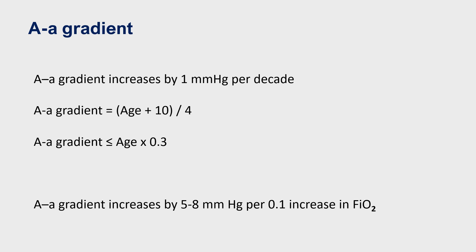As the FiO2 increases, the alveolar oxygen concentration increases. Thus, the gradient also tends to increase by 5–8 mmHg with every 0.1 increase in FiO2. In situations where we are unsure whether this increase in gradient is due to the increase in FiO2 or due to a lung pathology, calculation of the arterial-to-alveolar ratio will be beneficial. In normal circumstances, the arterial-to-alveolar partial pressure ratio should be more than 75%; if it is less, we are probably dealing with a pathological lung disease.